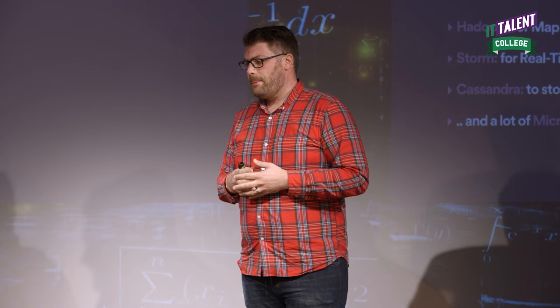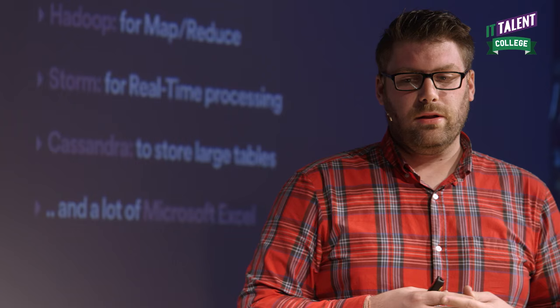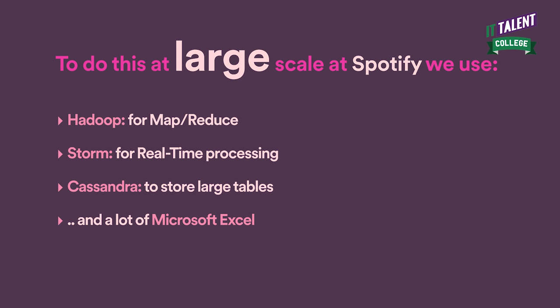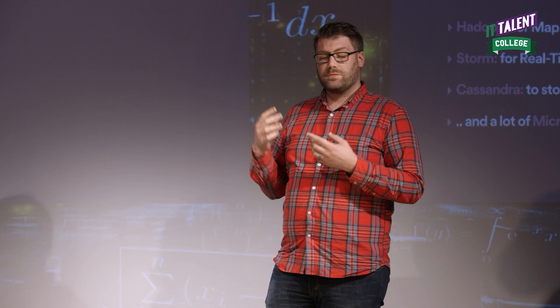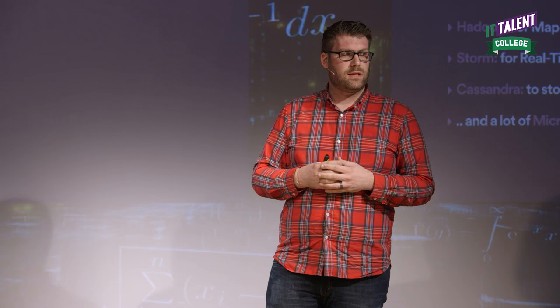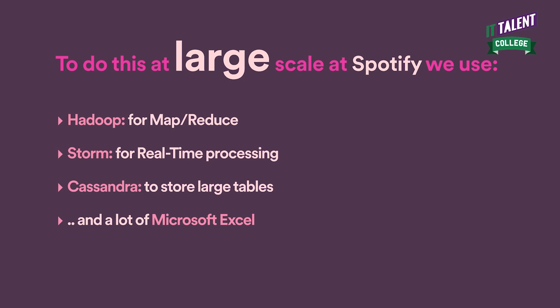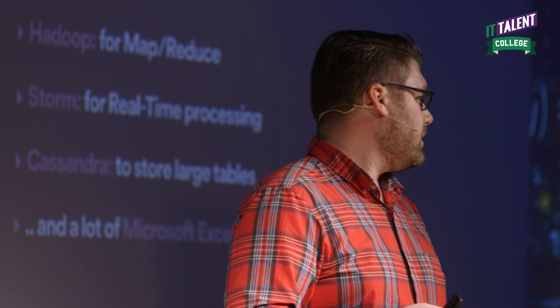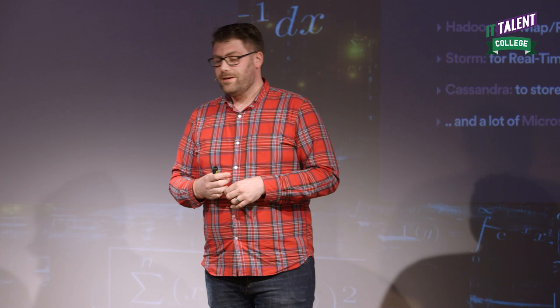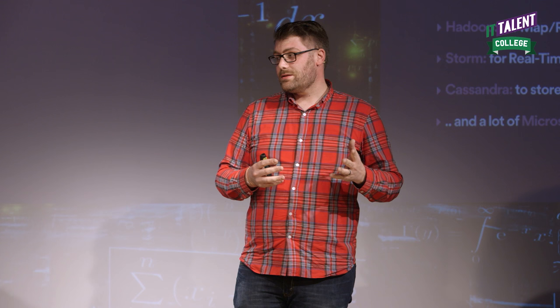To do this at large scale at Spotify, we use MapReduce via Hadoop. We use Storm for real-time processing, which was mentioned earlier. You can look these things up and impress your friends. We use Cassandra to store data, and we actually use a lot of Excel. You might think, 'Spotify, hip company, cool, those guys build awesome software' — but a lot of analysis happens in Excel, because Excel is pretty amazing.